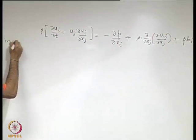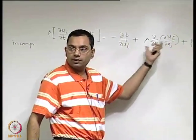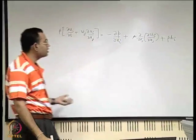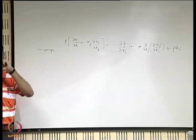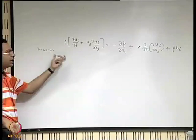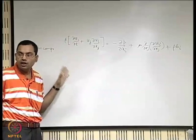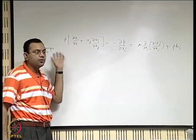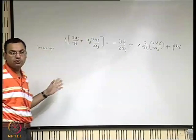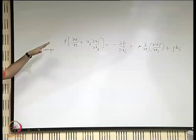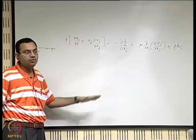The assumptions are incompressible flow — because if it was compressible flow, there is a term associated with the divergence of the velocity vector that would appear. Then Newtonian and Stokesian fluid, homogeneous and isotropic. With the additional incompressibility constraint, this is the form of the equation we derived. From now onwards, whatever exact solutions we derive, we will not explicitly mention that it is incompressible flow, but keep in mind that is the assumption we are following.